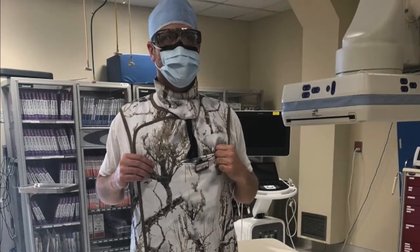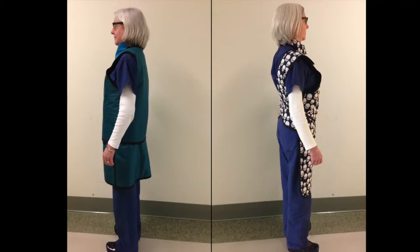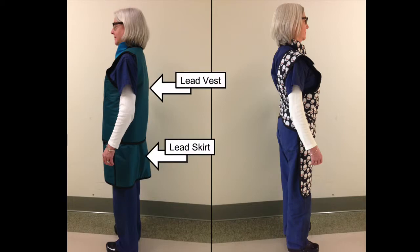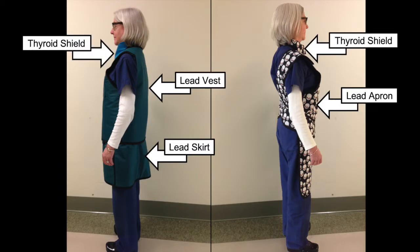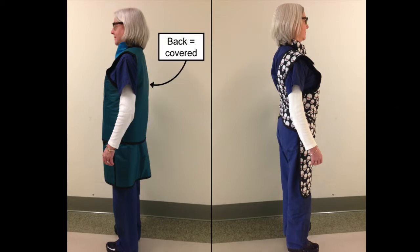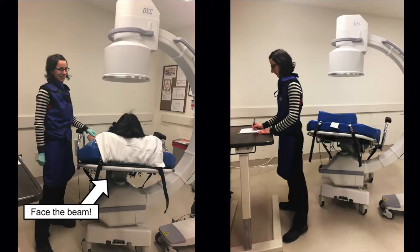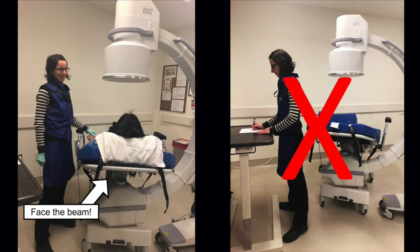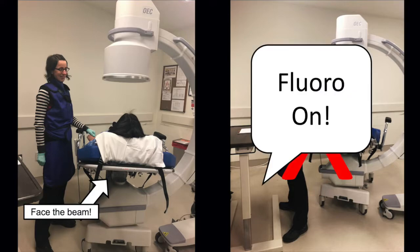All personnel not behind a radiation shield or barrier need to wear a lead vest and skirt or a lead apron, and everyone should be wearing a thyroid shield. You can see the lead vest and skirt combination protect both the front and the back of the wearer. However, the apron leaves the back unprotected. So anyone wearing an apron must face the X-ray source when the beam is on. To ensure that this happens, be sure to instruct all unfamiliar staff prior to the procedure to face the beam and remember to loudly announce fluoro on when you hit the pedal.